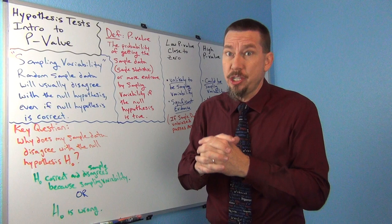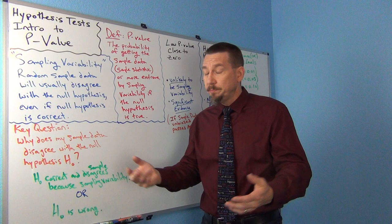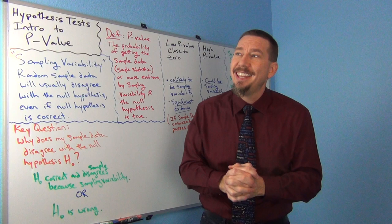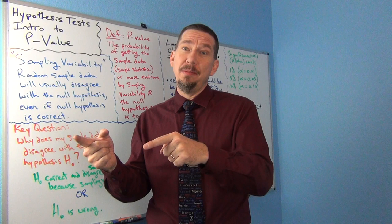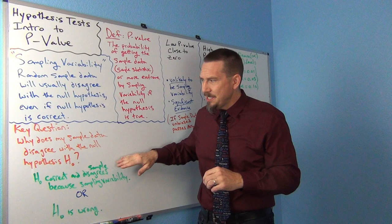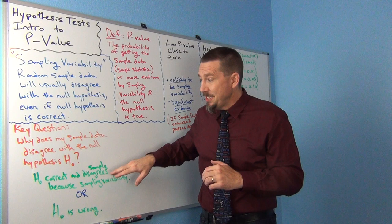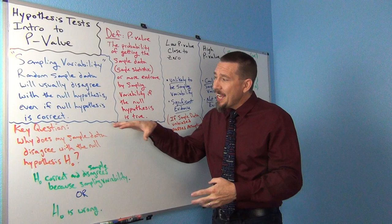There are really two answers to this question. One possibility is that the null hypothesis is wrong — maybe that statement about the population is actually wrong, and the sample data disagrees because it's wrong. The other possibility is that the null hypothesis could be correct, and the sample data disagrees because of sampling variability — because all random samples are a little bit off. That idea is really what drives this discussion of p-value.